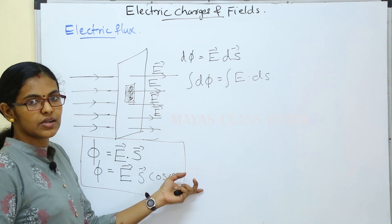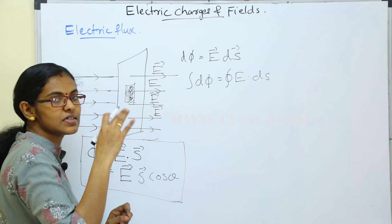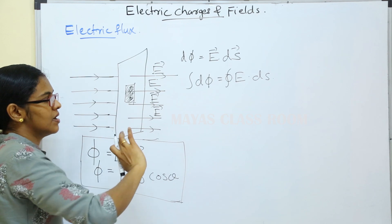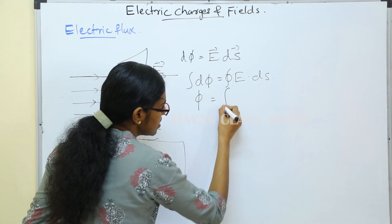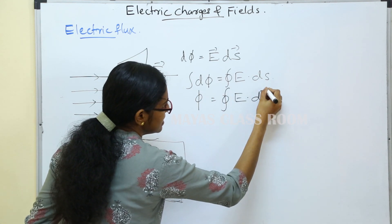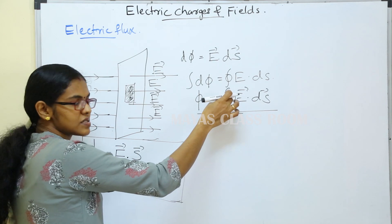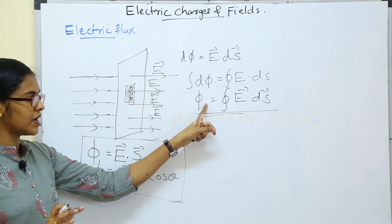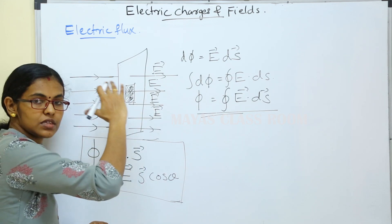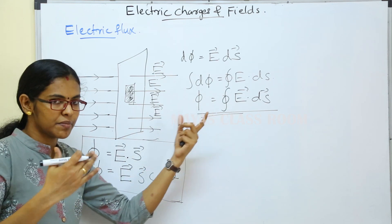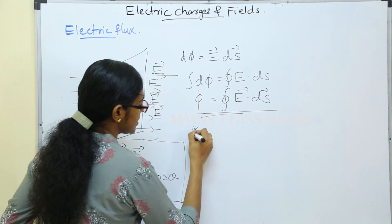The integral of dφ equals the integral of E dot dS. We consider the total surface integral. φ is equal to the surface integral of E dot dS. This is the total surface integral of E dot dS. This electric flux is a scalar quantity.